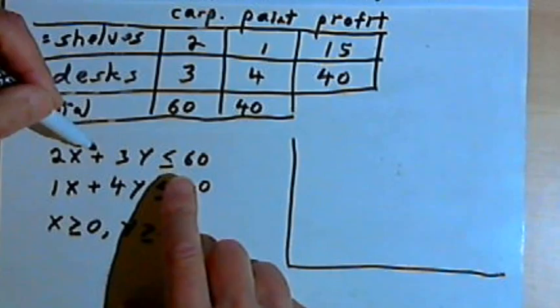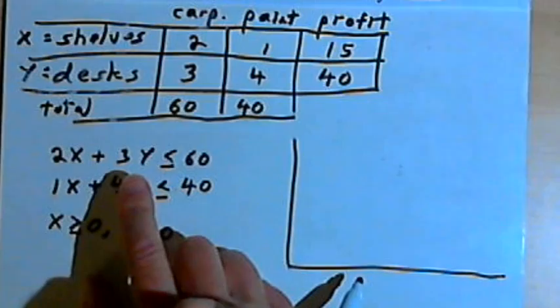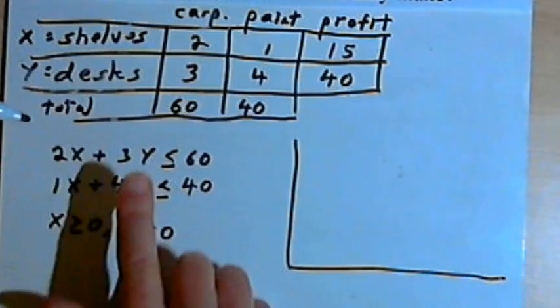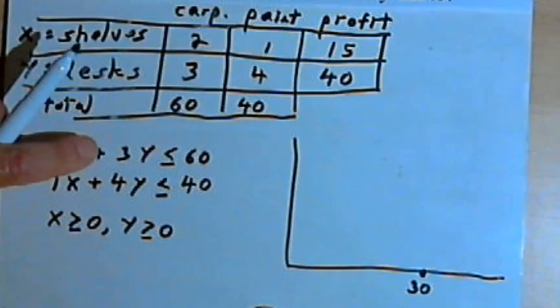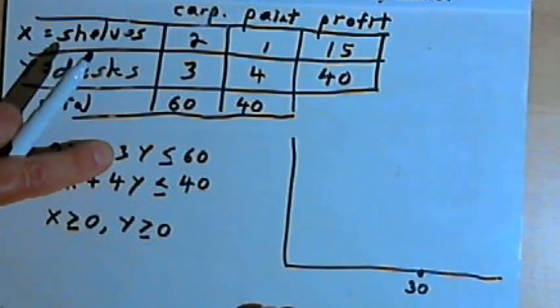And let's figure out where the x and y intercepts are for that first inequality. Well, if I look at that inequality, I've got 2x plus 3y is less than or equal to 60. So the x-intercept is going to happen when y is 0. So let's think of this as an equation 2x equals 60, which would mean that x would equal 30. So we have an x-intercept over here at 30. For the y-intercept, since that happens on the y-axis, when x is 0, we'll just take 3y equals 60. And solve that. If we have 3y equals 60 and divide both sides by 3, we get y equals 20.